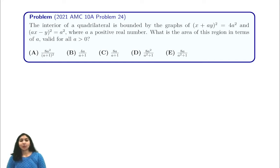Hi everyone! In today's video, we're going to be going through 2021 AMC 10A problem 24. It says that the interior of a quadrilateral is bounded by (x + ay)² = 4a² and (ax - y)² = a², where a is some positive real number. And we're trying to find the area of this region in terms of a.